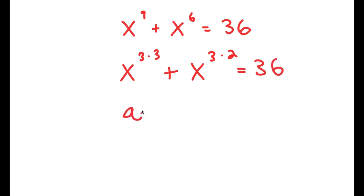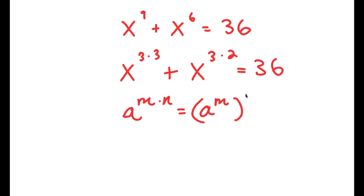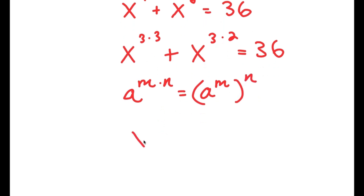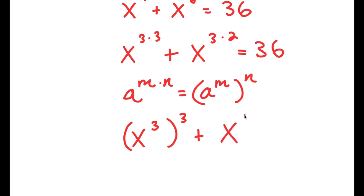If I have something in the form a to the power of m times n, this is equal to a to the power of m to the power of n. So x to the power of 3 times 3 equals x to the power of 3 to the power of 3, and x to the power of 3 times 2 equals x to the power of 3 to the power of 2.